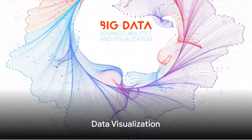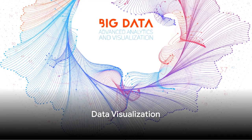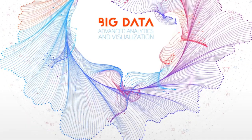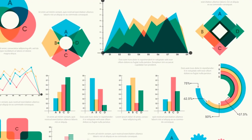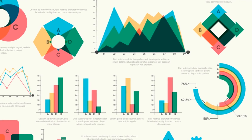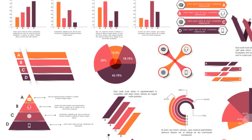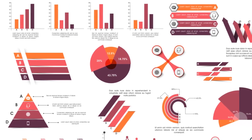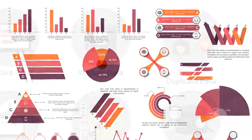Number 2 brings data visualization. This is the representation of data or information in a graph, chart, or other visual format. It communicates relationships of the data with images. It's like painting a picture with data.